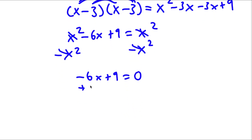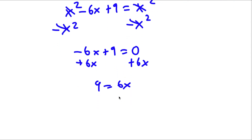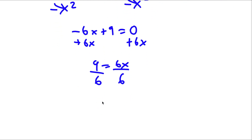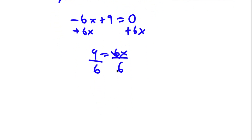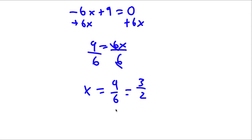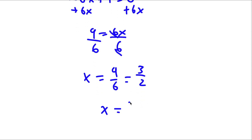Now if I add 6x on both sides, I get 9 is equal to 6x. And if I divide by 6 on both sides, these two cancel out, and I'm left with x equals 9 over 6, which is equal to 3 over 2. So x is equal to 3 over 2 is our answer.